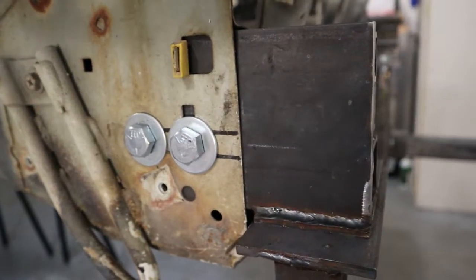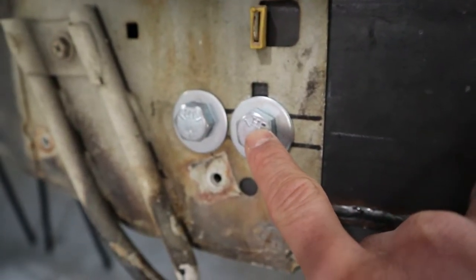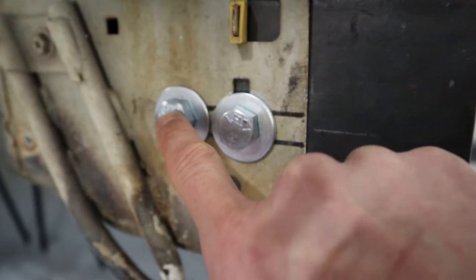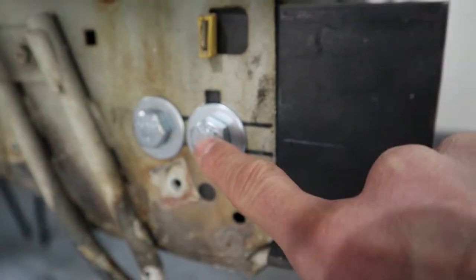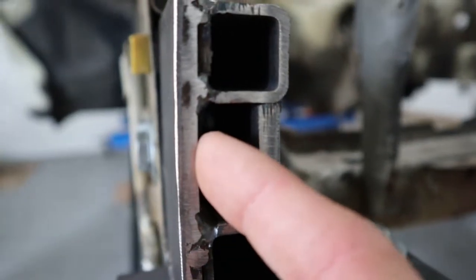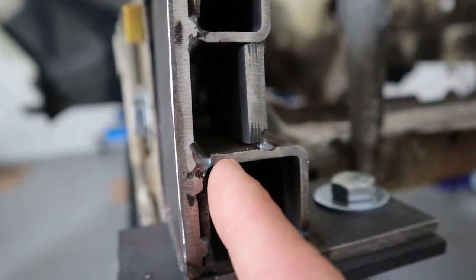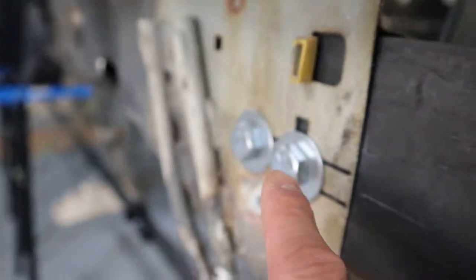Whereas this side here, there's a factory half inch hole here, and then I just marked out inch and a half over and drilled that hole. But the problem with this side is the nuts that are welded to this piece on this side are actually a little lower.